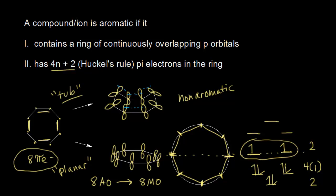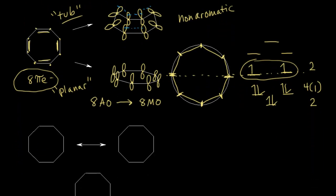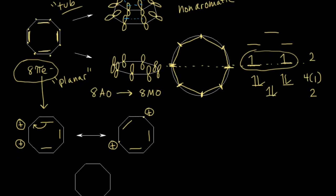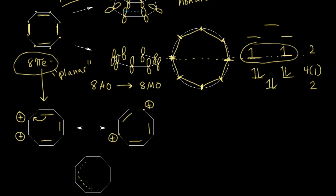It is possible to react cyclooctatetraene by oxidizing it, causing it to lose some electrons. The pi electrons on one side stay, while we remove the pi electrons on the left — taking away that double bond gives those two carbons a positive charge. Drawing a resonance structure, I can move those electrons over, shifting the positive charge to another carbon. The positive charges are spread out throughout the entire ion, and one way to represent that is to show the electrons delocalized across the whole ion with an overall 2+ charge.